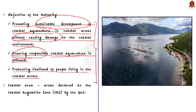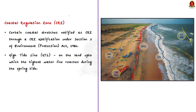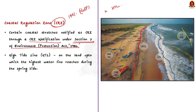The coastal area means only those areas declared as the Coastal Regulation Zone (CRZ) by the Government of India. Since 1991, the Union Ministry of Environment notifies certain coastal stretches as CRZ through a CRZ notification under Section 3 of the Environment Protection Act 1986. Such a CRZ area is based on two demarcations: the high tide line and the low tide line. The high tide line is the line on the land up to which the highest water line reaches during the spring tide.